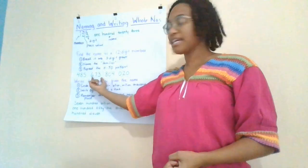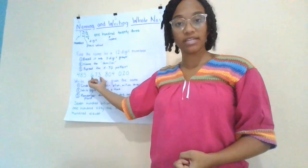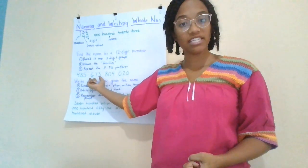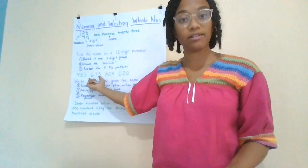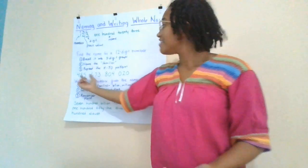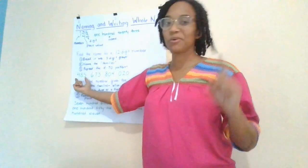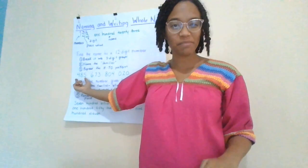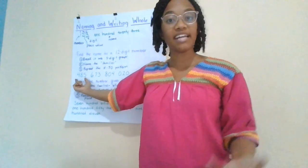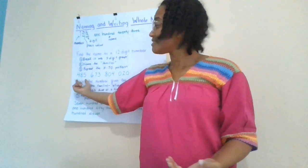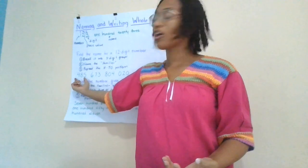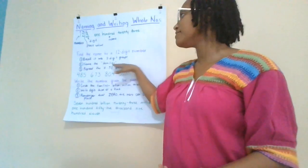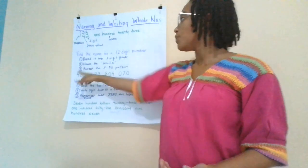Then the next family is the millions. When we go to the next set of three digits, that's the millions. And finally, this one will be a little bit confusing because it's different in Spanish, but in English, these next three digits are called the billions.